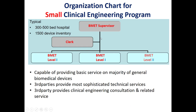Here we see an organizational chart for a small clinical engineering department, suitable for a hospital with 300 to 500 bed capacity or a medical device inventory of more than 1,500 devices. Such a department provides basic services for the majority of general biomedical devices, while more sophisticated technical services and clinical engineering consultation are covered by third parties. The structure includes a head of department, a BMET supervisor, biomedical technicians at level one and two, and a clerk.